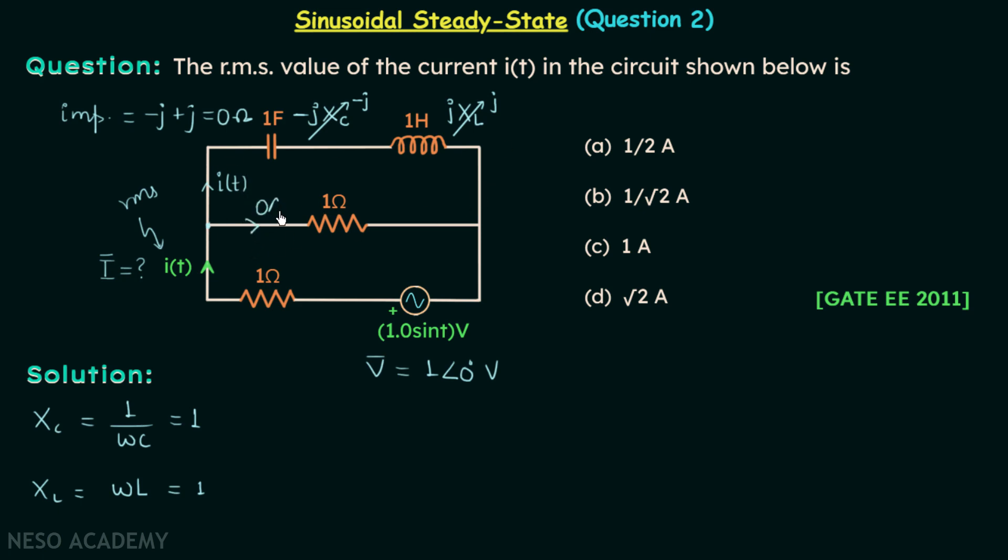Now we can apply KVL in the outer loop. We will have plus v phasor, then we will have minus 1 multiplied by i phasor minus 1 multiplied by i phasor equal to 0.